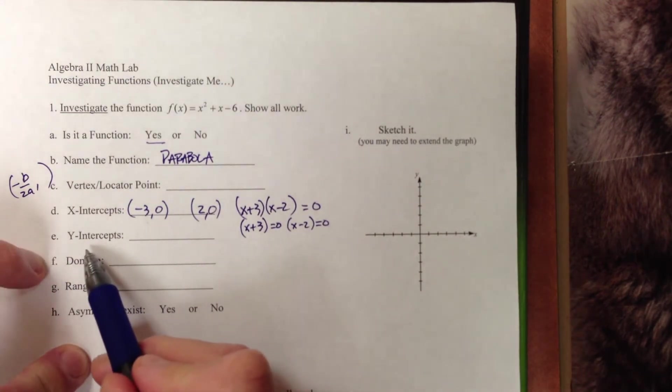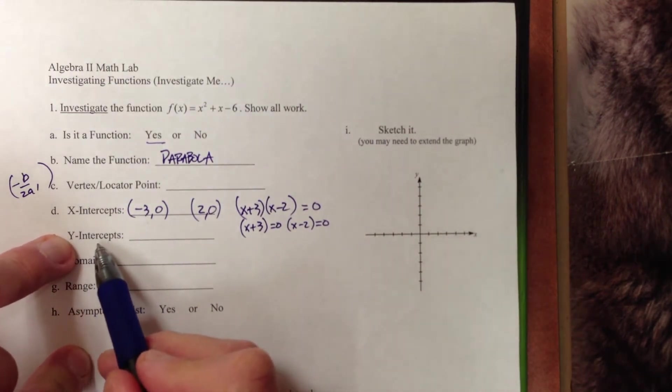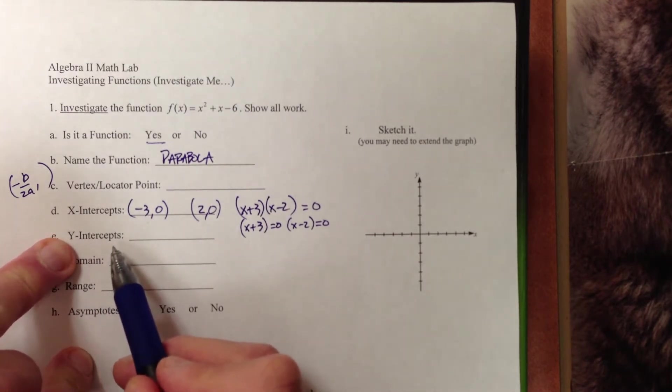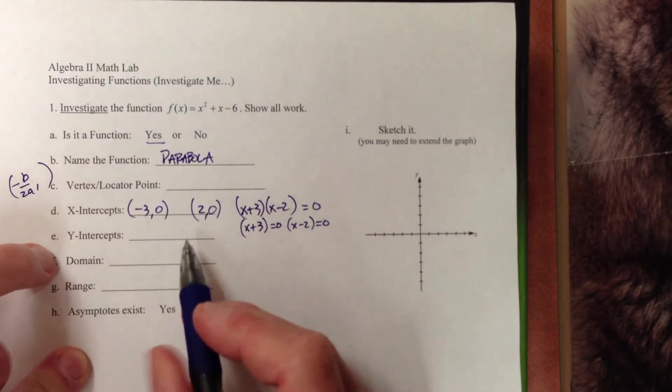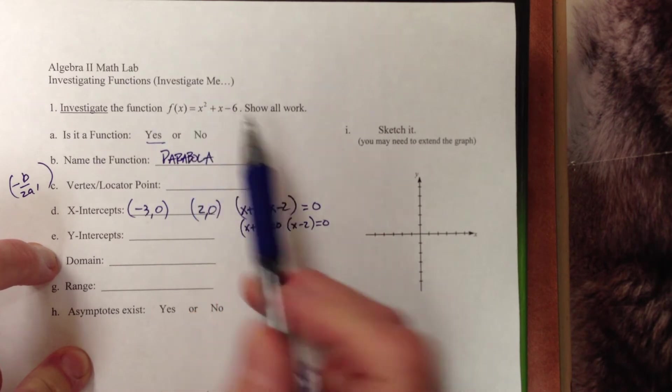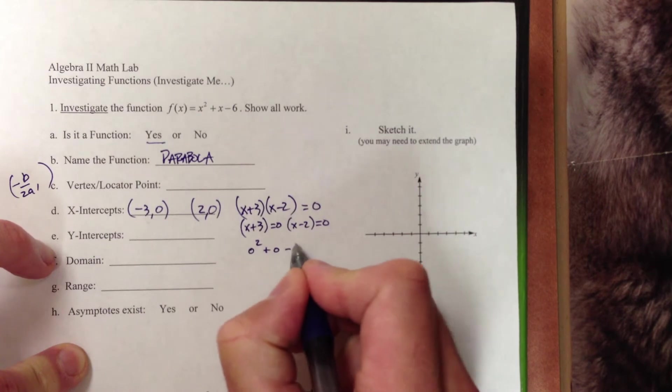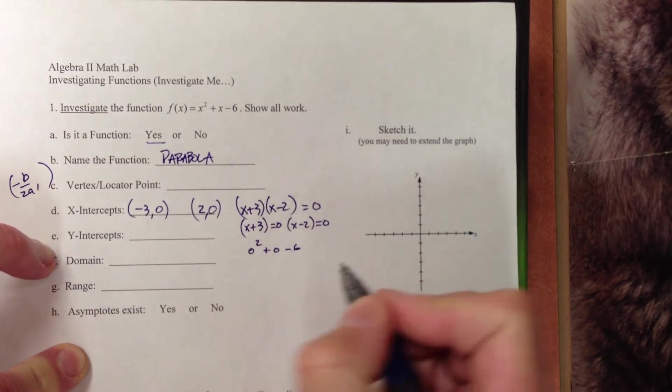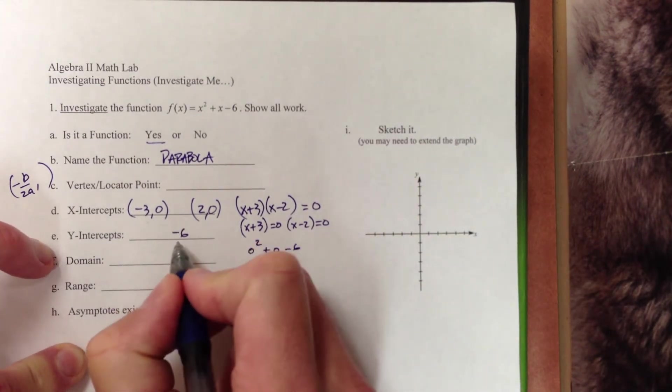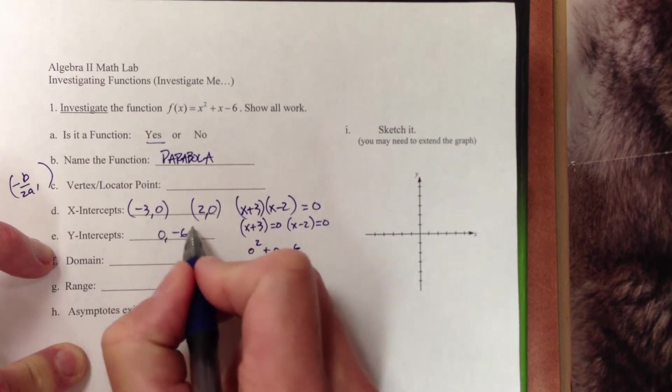Now we can jump into our y-intercepts, which happen to be a little bit easier most of the time. We are going to substitute in an x value of 0. So when I substitute in an x value of 0 into my original function, I get 0 squared plus 0 minus 6. Making that relatively easy, we get an answer of negative 6, and that is a y-intercept, so we have an x value of 0.